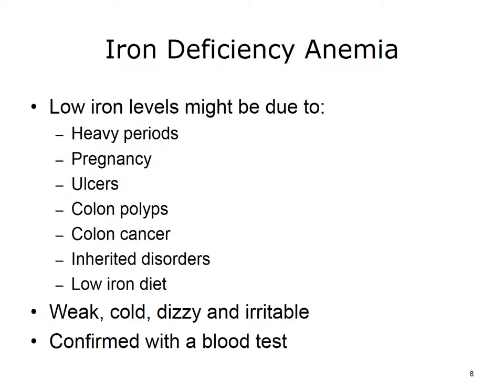One common blood disorder is iron deficiency anemia. Your body needs iron to make hemoglobin, which gives blood its red color. When your iron levels get low, you have iron deficiency anemia. Iron levels might be too low because of heavy menstrual periods, pregnancy, ulcers, colon polyps, colon cancer, inherited disorders, or a diet that does not have enough iron. Anemia can make you feel weak, cold, dizzy, and irritable. It is confirmed with a blood test.